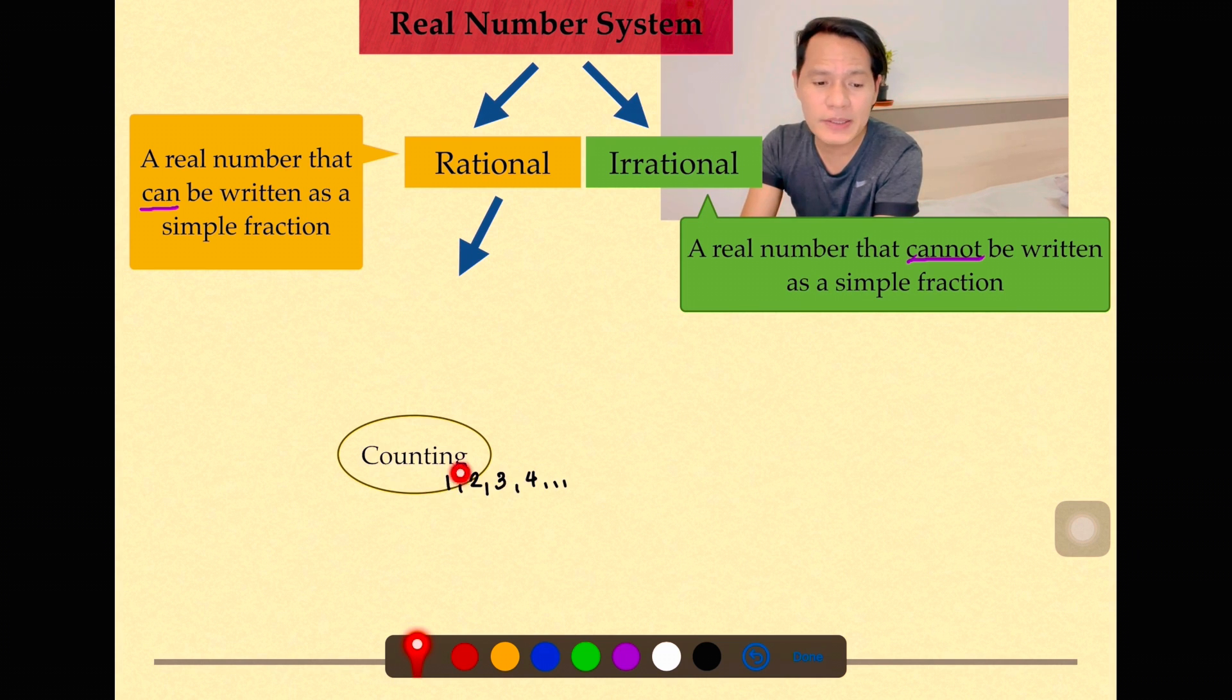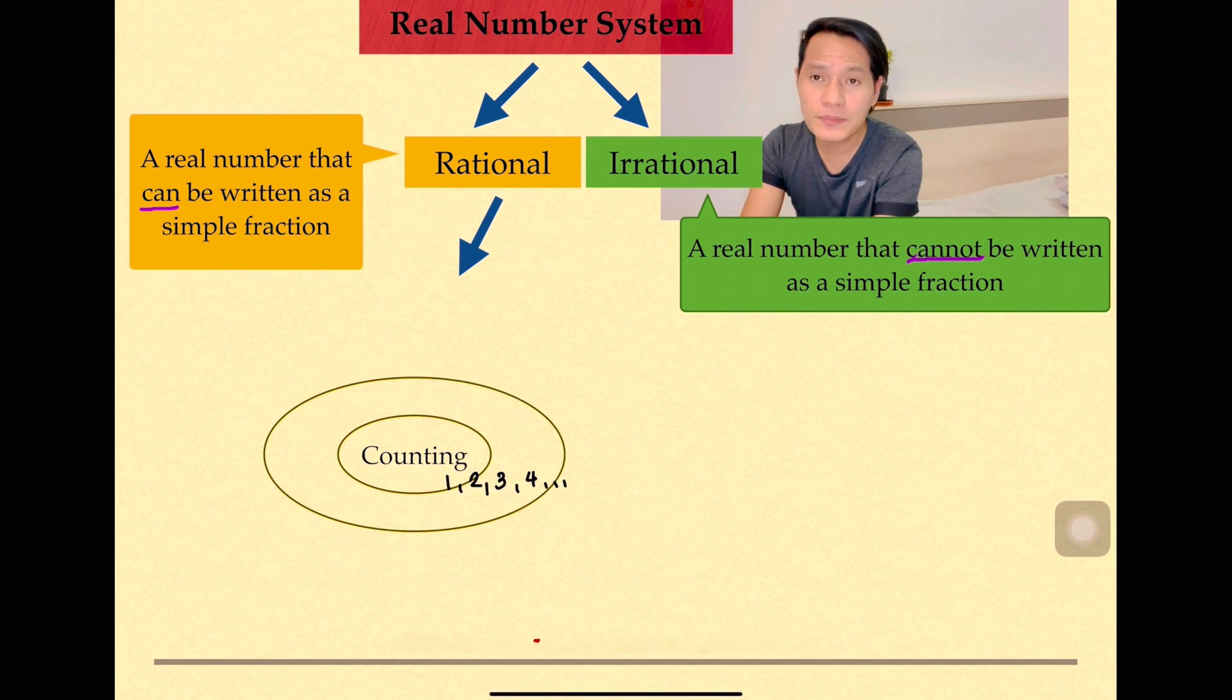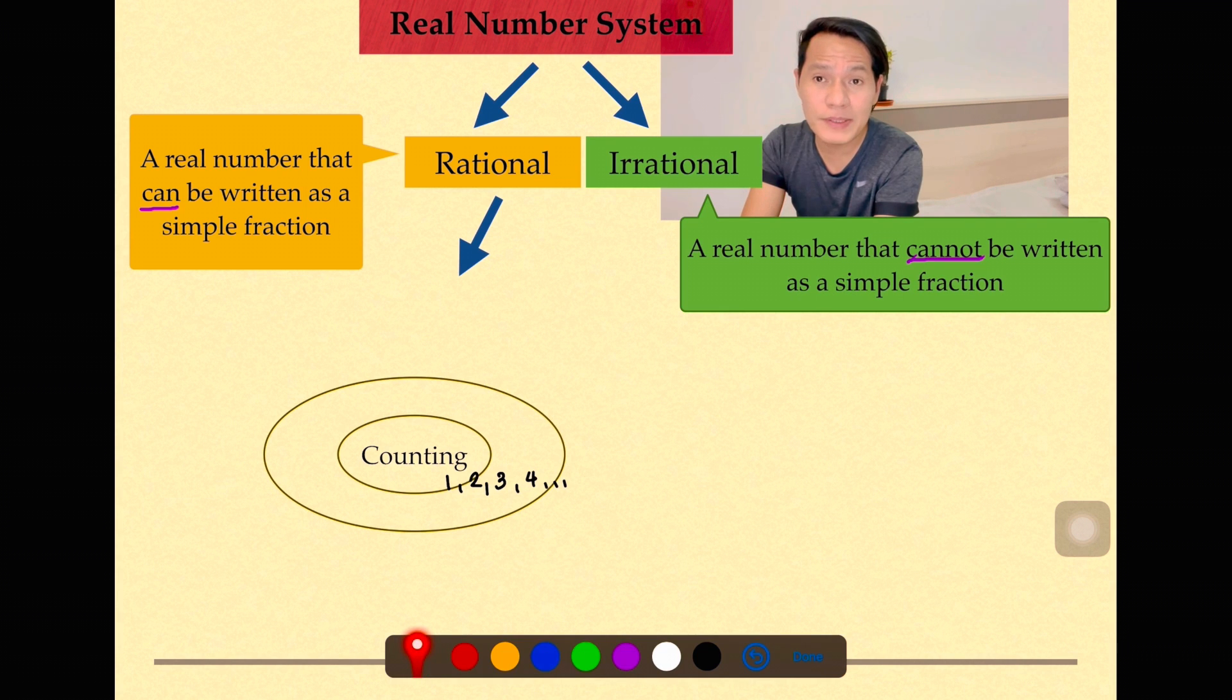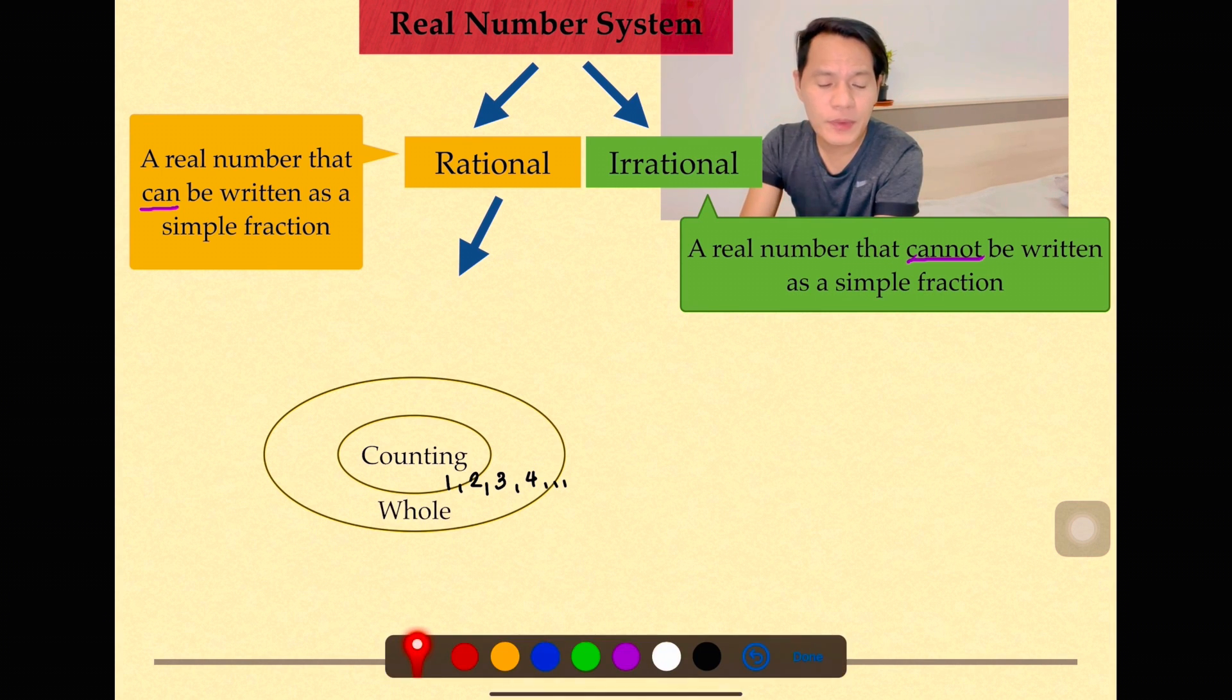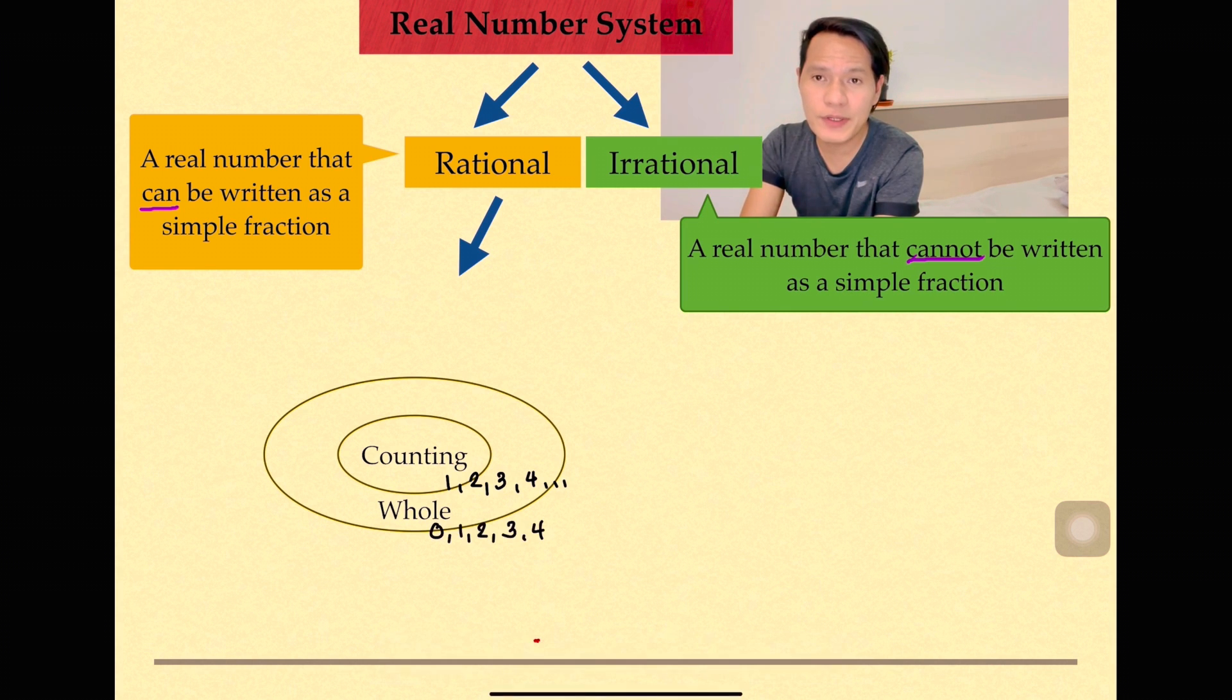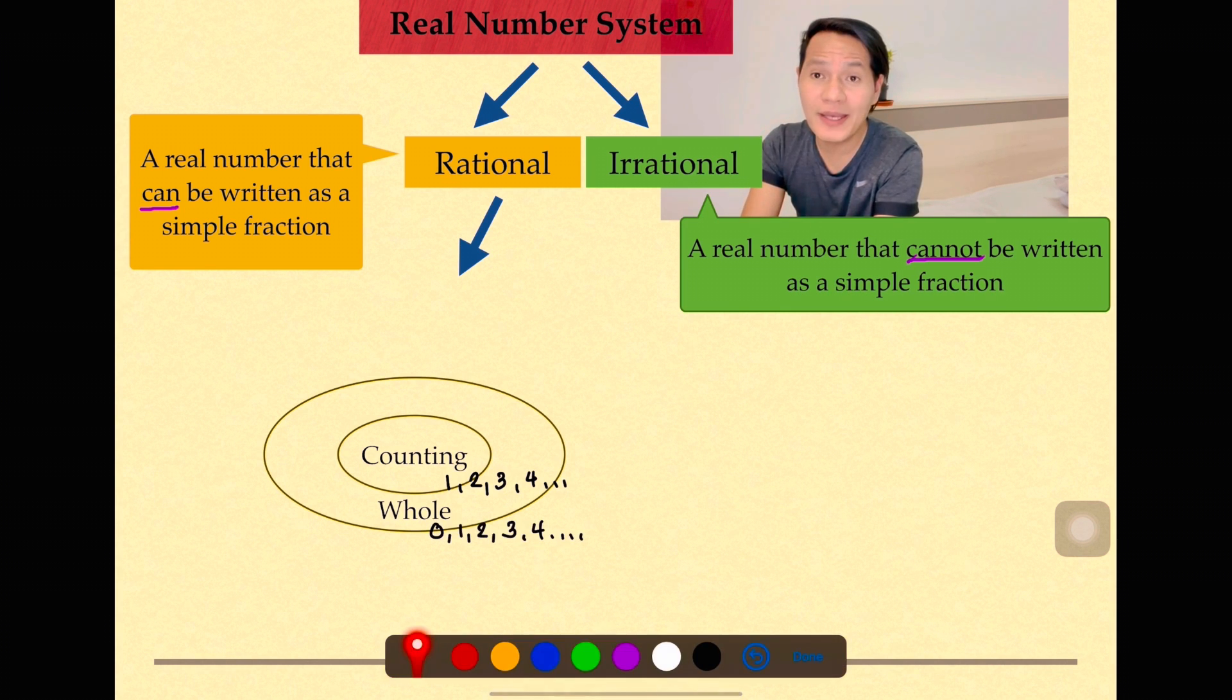Up next, counting numbers are part of it. In other words, we have the whole numbers. In whole numbers, starting with 0, we have 0 and then including the counting numbers. So when we say whole numbers, we include 0 in the set of numbers.